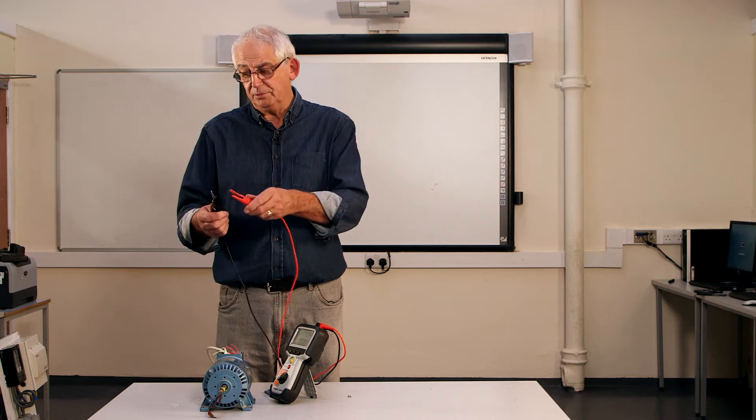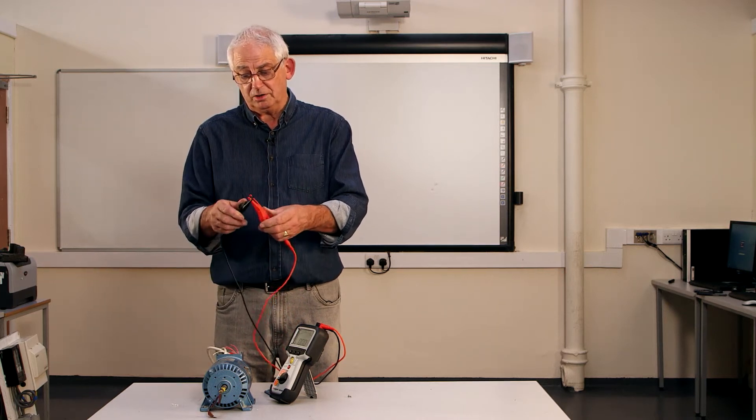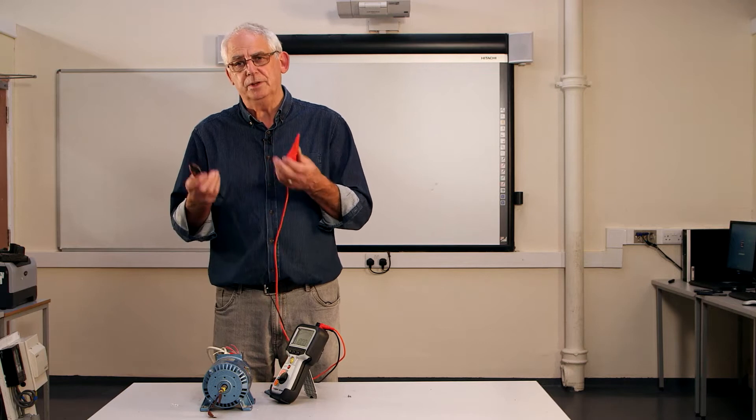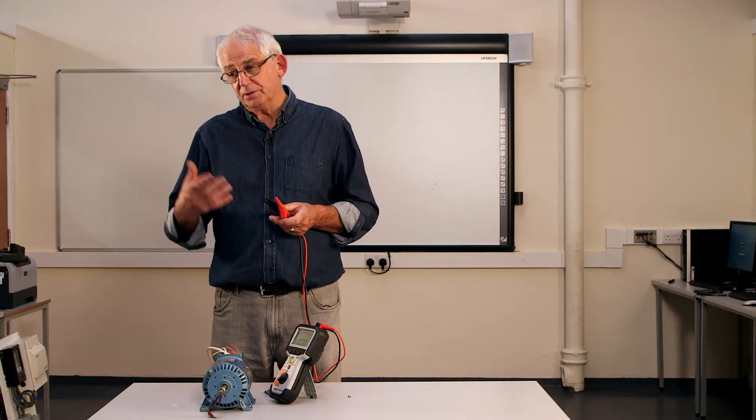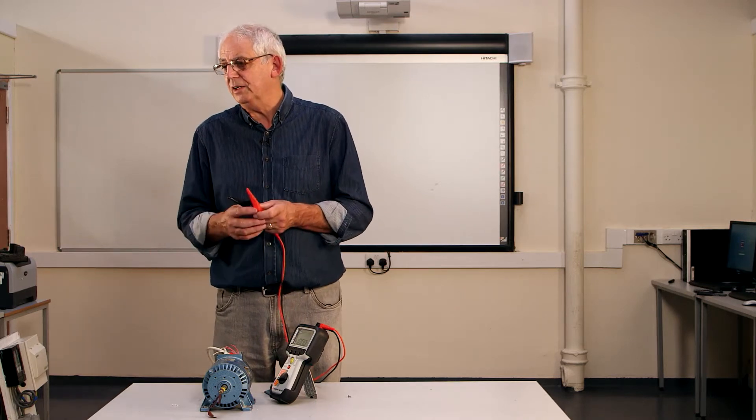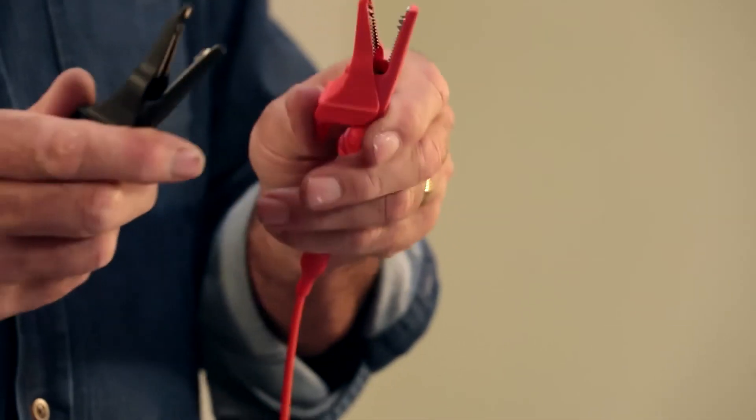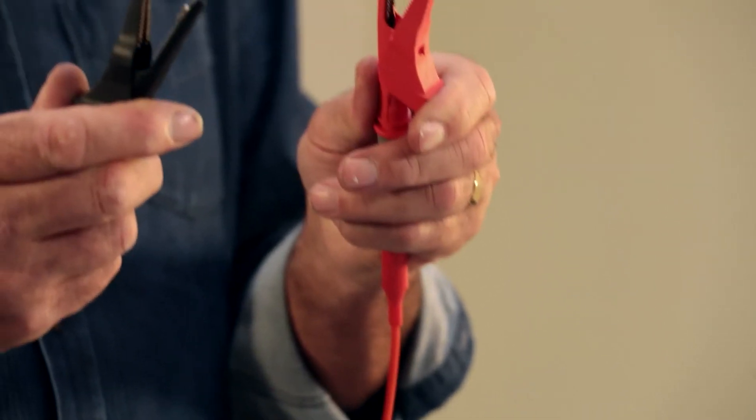And just to recap, if we use the moving bits of the crocodile clips, the resistance is going to be higher. And when we zero it, we're going to be measuring values which are less than the actual values are. So it's important that we always use the solid bits of the crocodile clip.